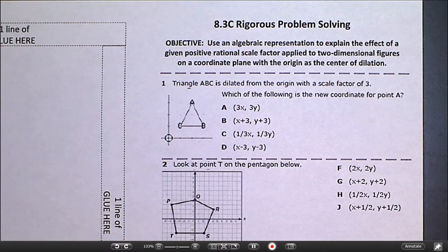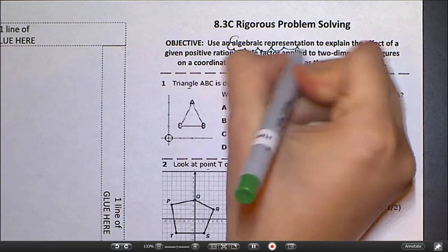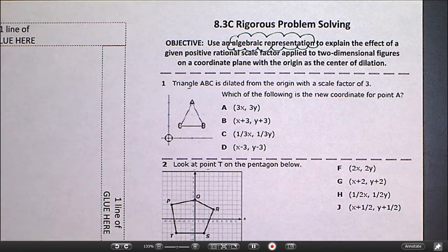This is the video lesson for 8.3c. Your objective today is to use an algebraic representation to explain the effect of a given positive rational scale factor applied to two-dimensional figures on a coordinate plane with the origin as the center of dilation.